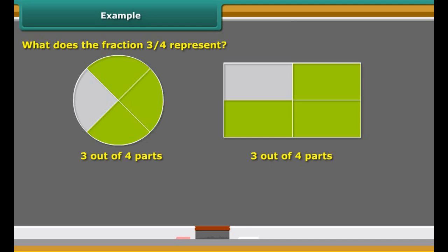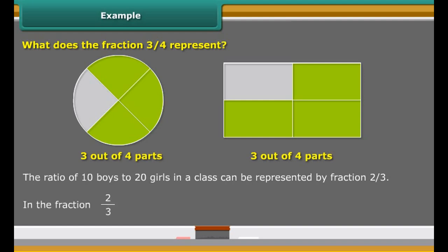The ratio of 10 boys to 20 girls in a class can be represented by fraction 2 upon 3. In the fraction 2 upon 3, number 2 is called the numerator of the fraction and number 3 is called the denominator of the fraction.